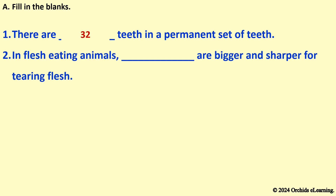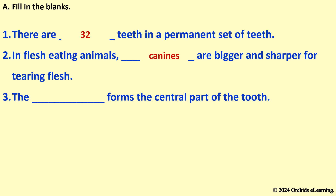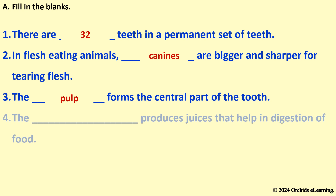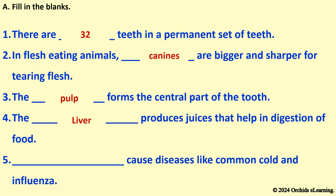In flesh-eating animals, canines are bigger and sharper for tearing flesh. The pulp forms the central part of the tooth. Both the liver and pancreas produce juices that help in digestion of food.